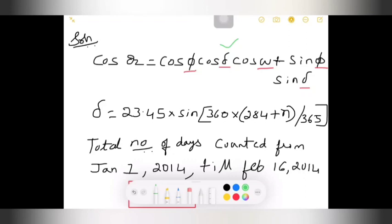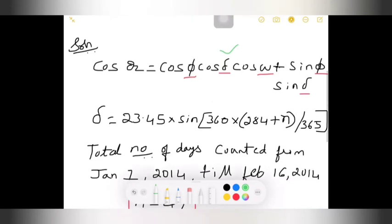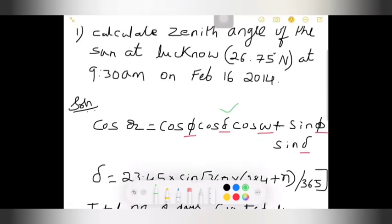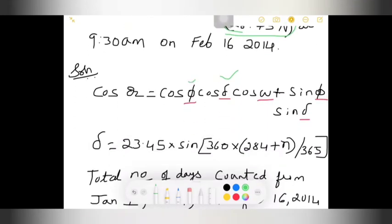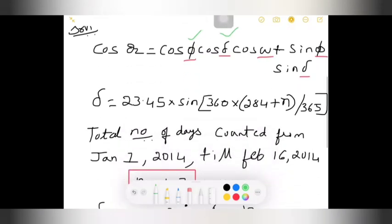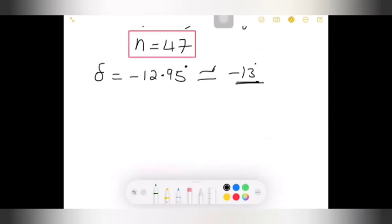Now delta is done. Next, phi. Phi is actually given in the problem. That is my 26.75 degrees, the latitude angle which is given. This itself is phi, which is given in the problem. Phi is also known, delta is also known. Next, we need to find W, that is nothing but my hour angle.